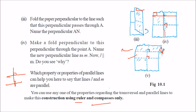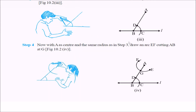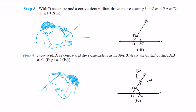You can use the ruler and compass. You can use the properties of a transversal and parallel lines to make the construction, using only the ruler and compasses. To make a parallel line, first make a line L, take a point A, then join A and B. Take any convenient radius and draw an arc cutting L at C.